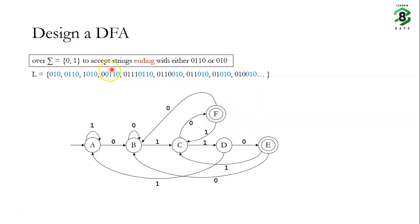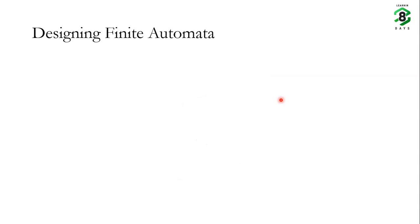This completes the DFA which accepts strings ending with 0110 or 010 over input alphabet {0,1}. We have seen designs of both a NFA and a DFA for the same problem — they accept the same language. The NFA is clearly easier to design. But why do we study DFAs? Because all real-life machines are deterministic, and our actual goal is to design a minimal DFA with the minimum number of states.